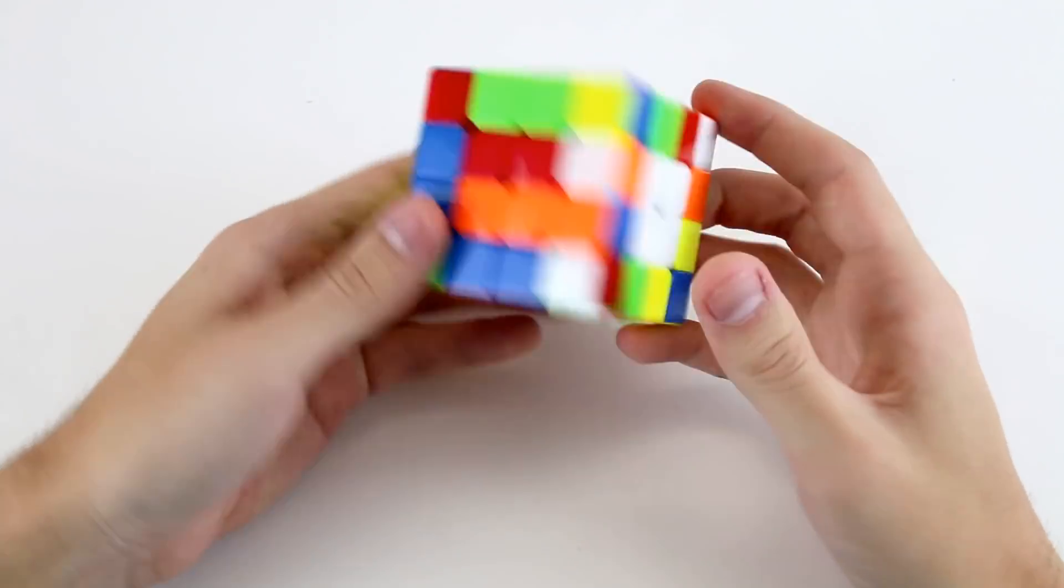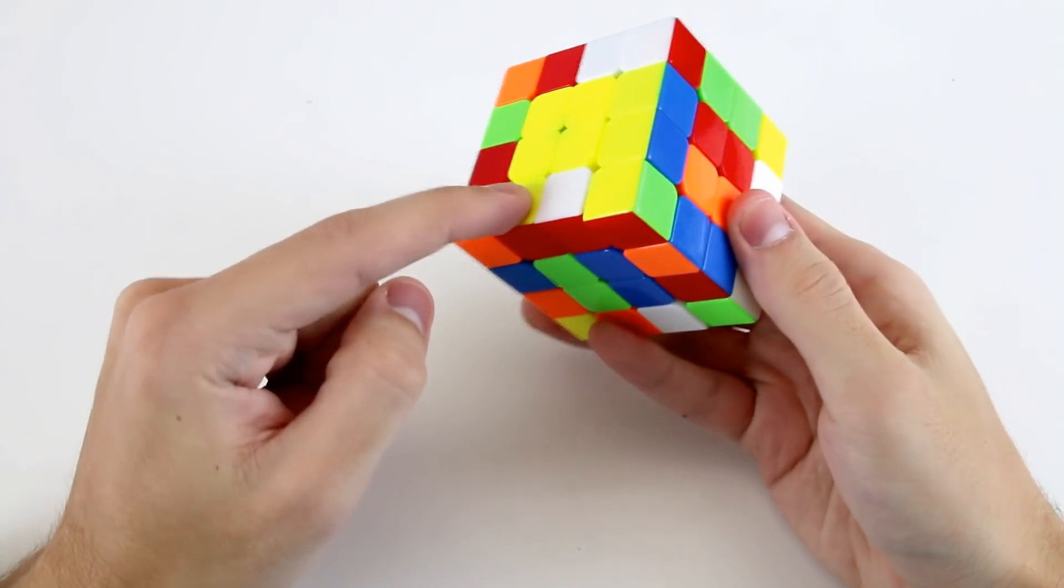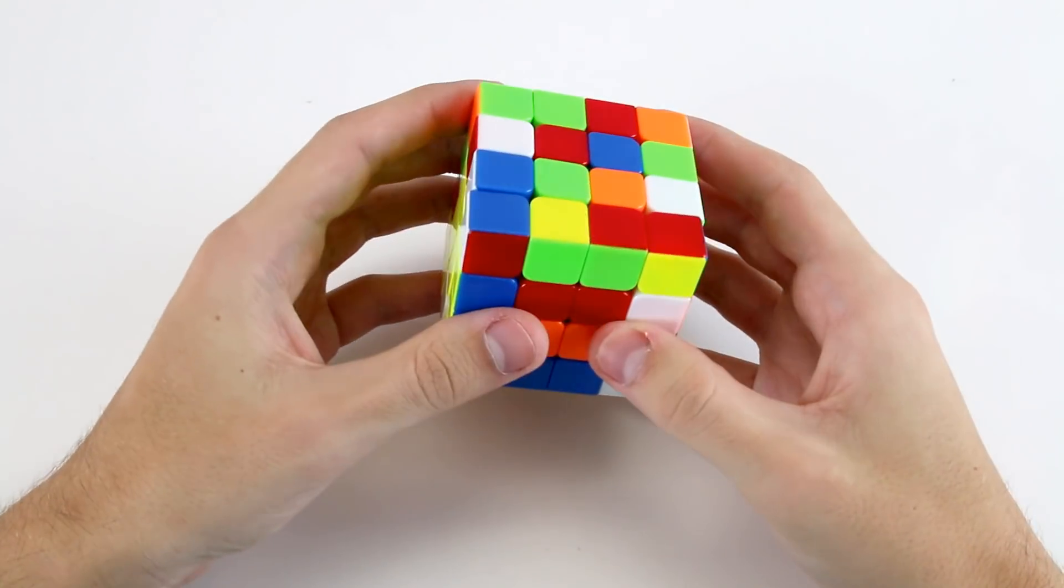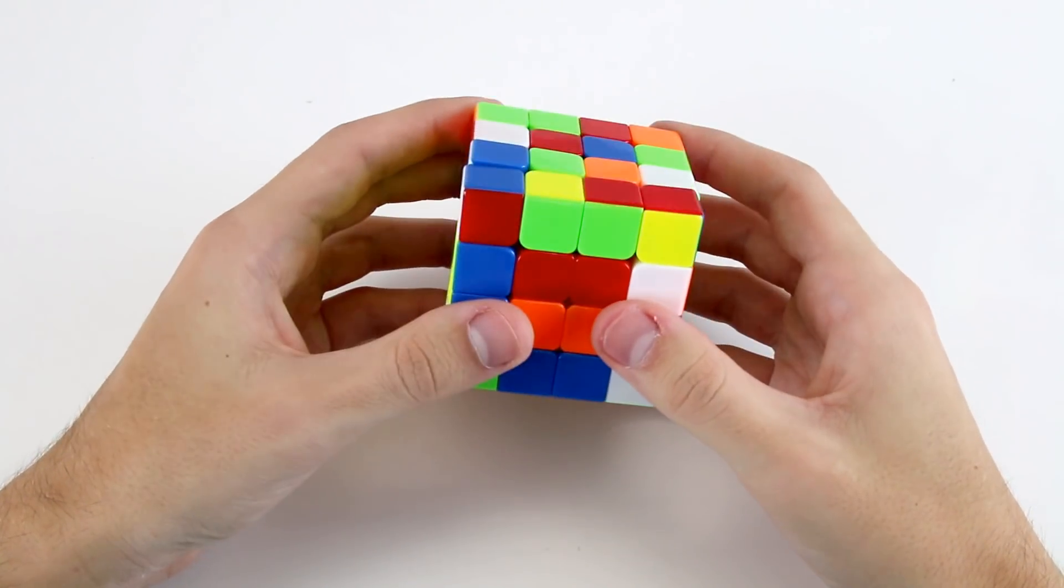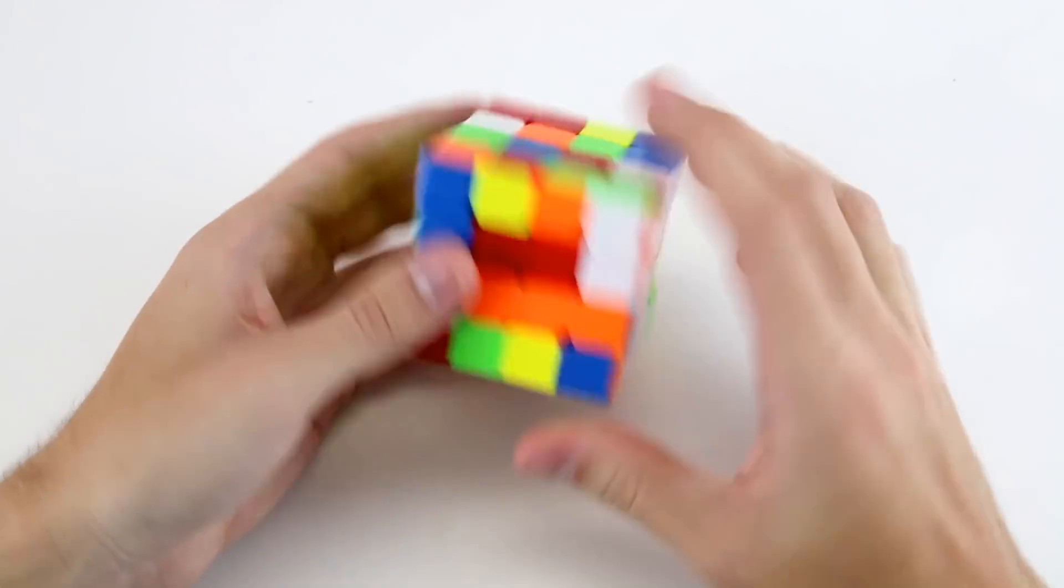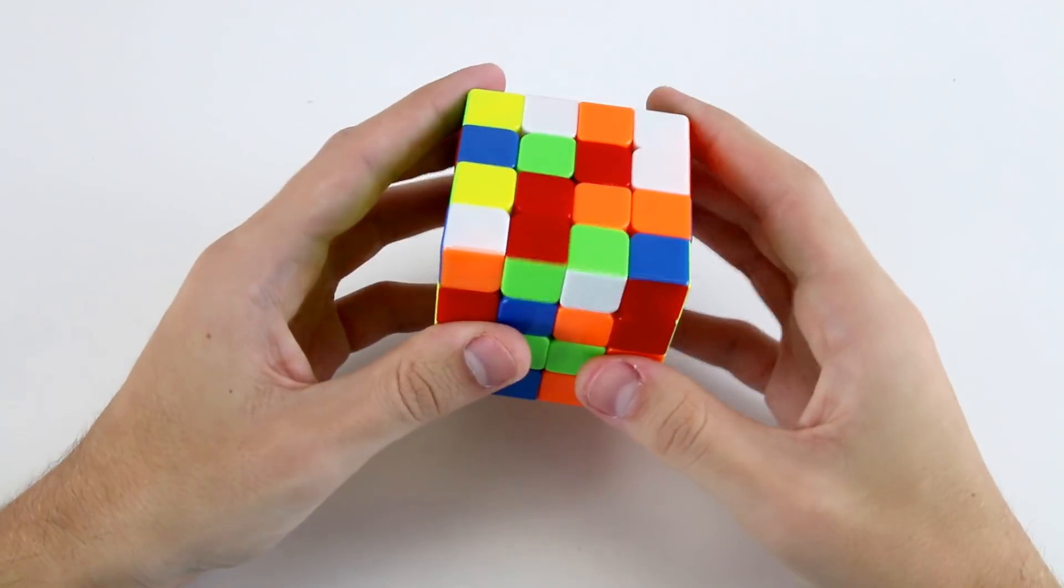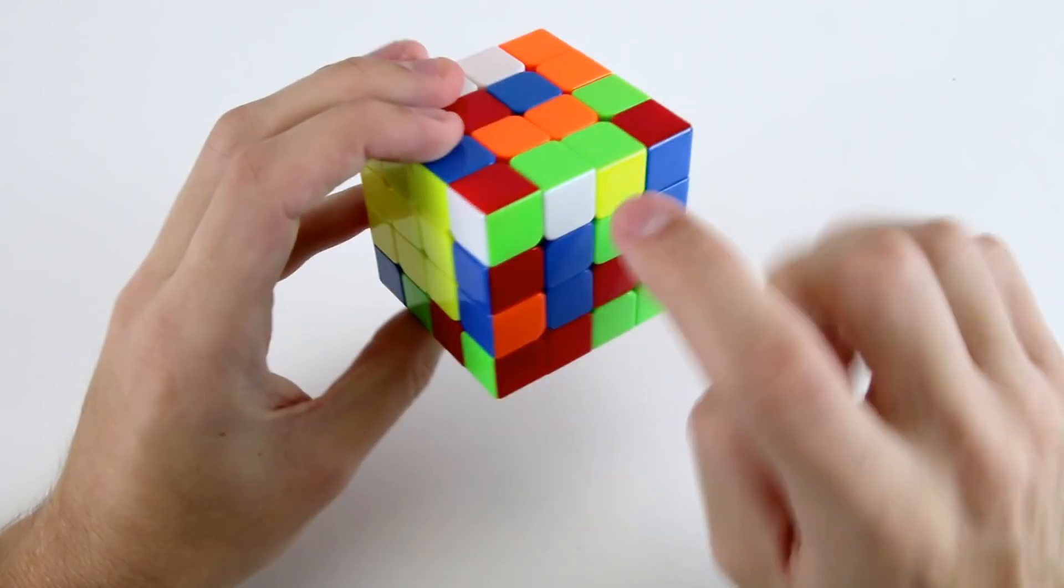So I've got this red and white, sorry yellow and red and yellow and red up here so the best thing to do is probably D prime U2 R2 U like that and then I've got the yellow and greens this one and this one like so.